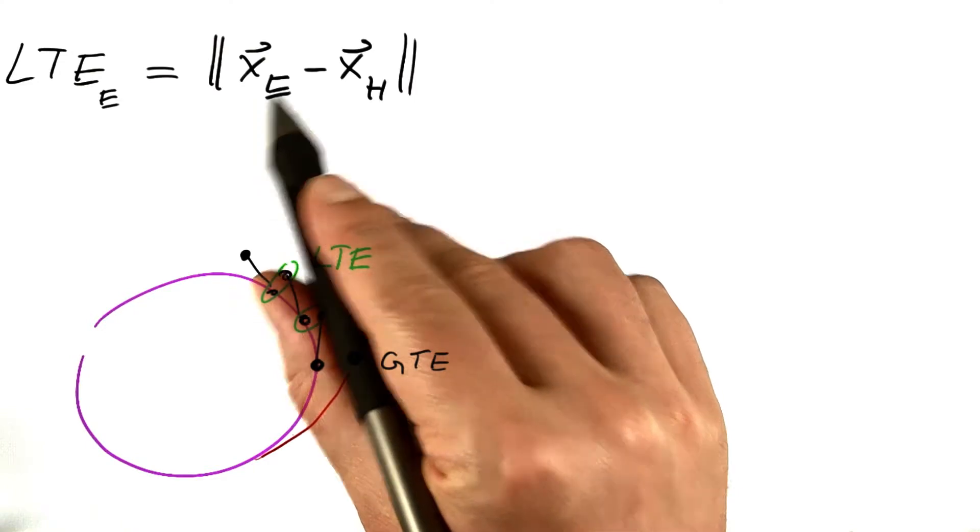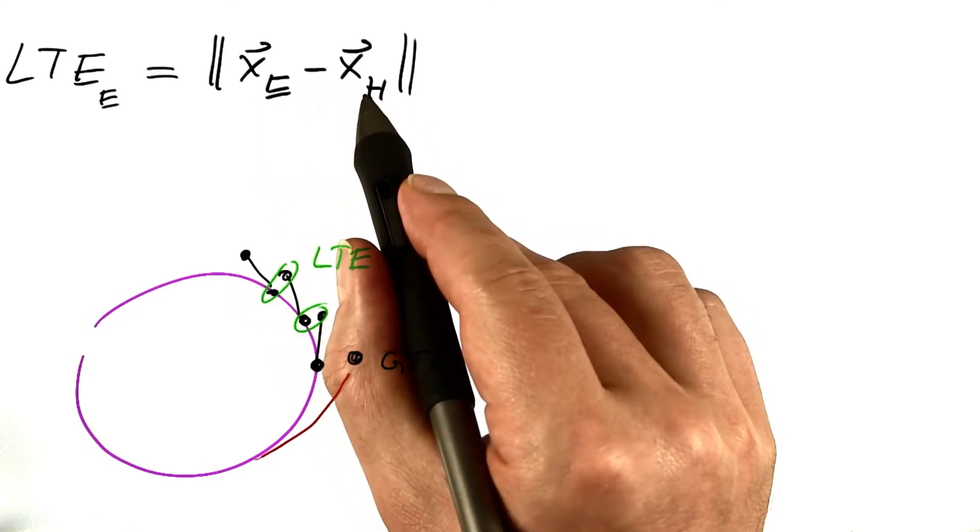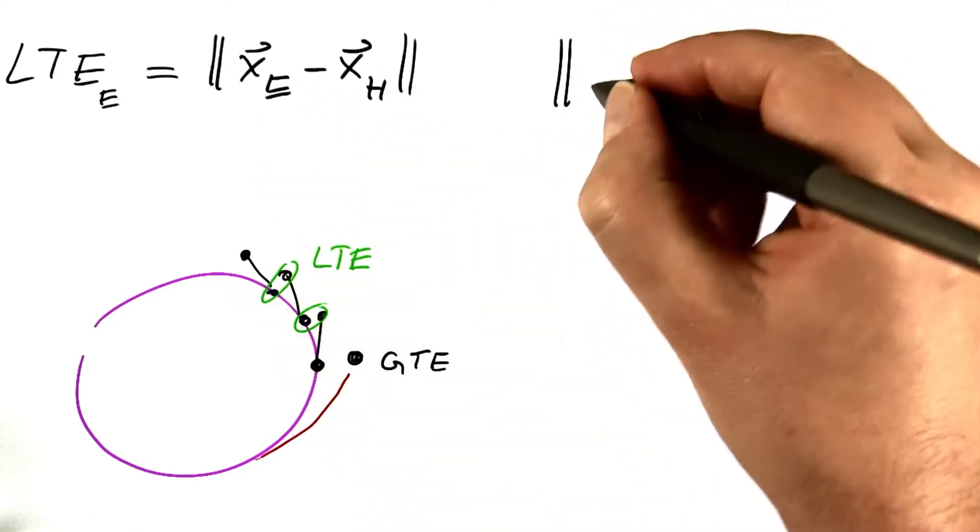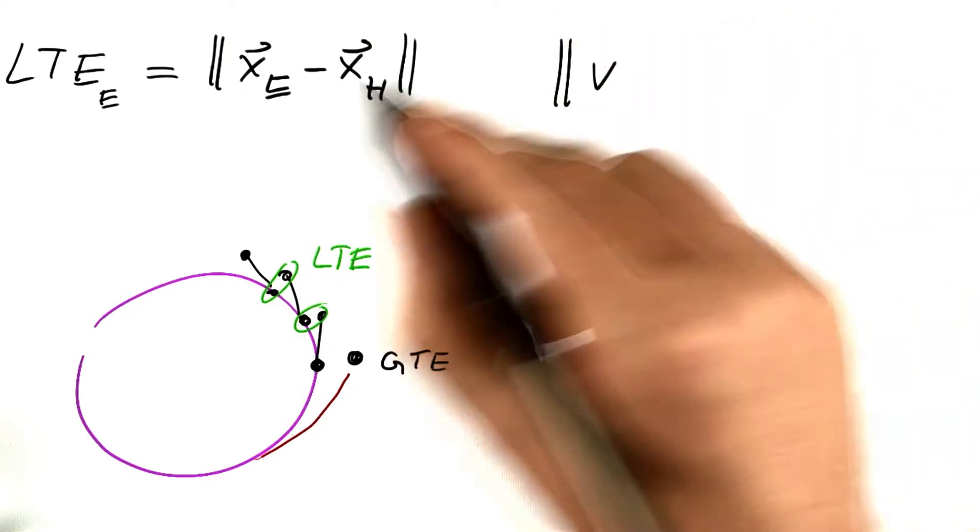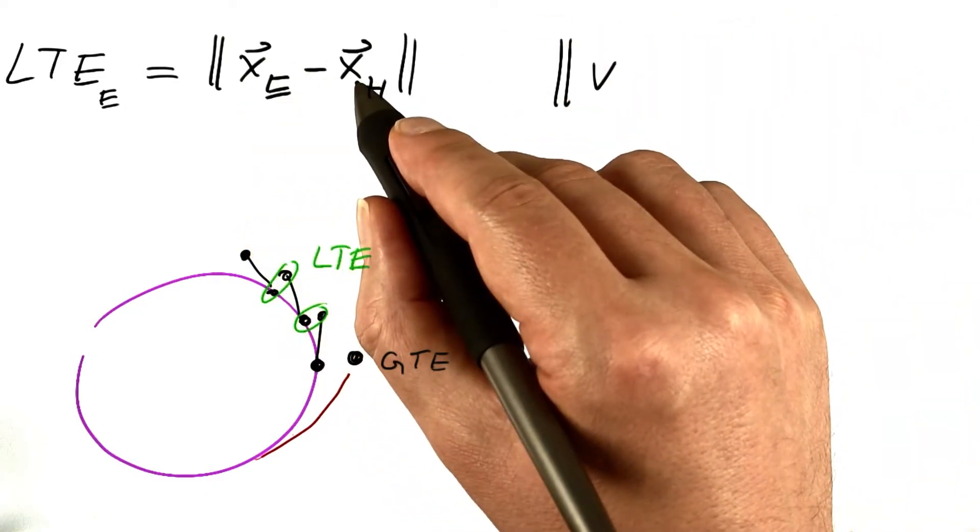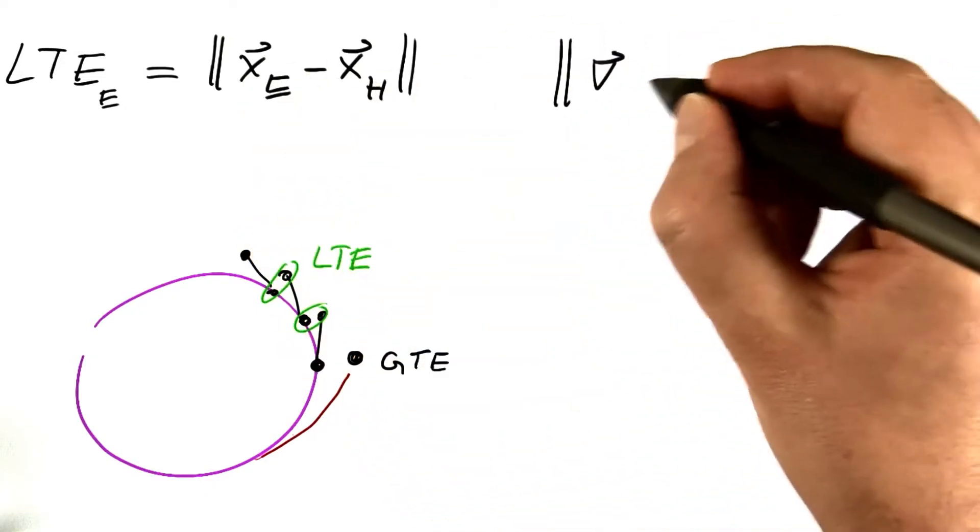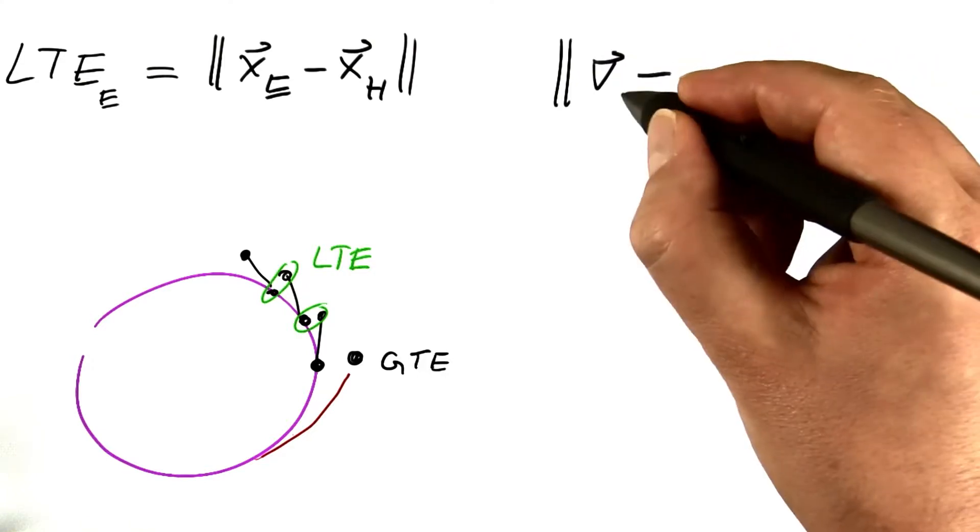I'm cheating a little here. I must take the velocity into account. Of course, we have several dimensions, two dimensions concerning x and two dimensions concerning velocity. We have to take all of them into account.